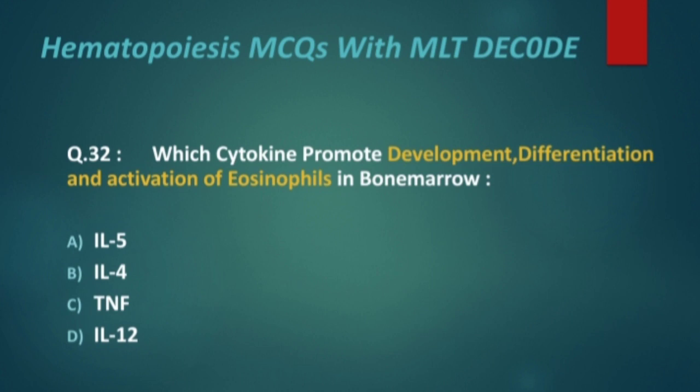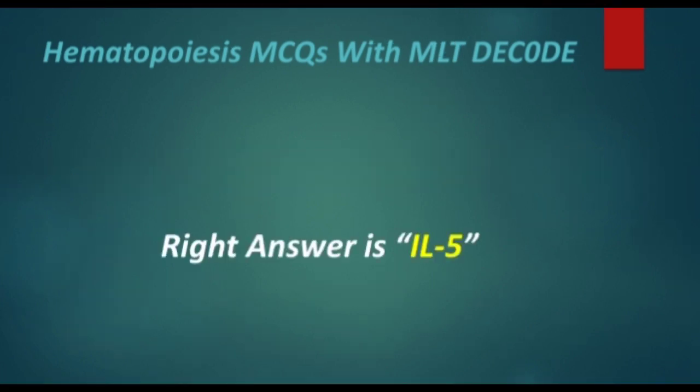Next: which cytokine promotes development, differentiation, and activation of eosinophils in bone marrow? Options are: interleukin-5, interleukin-4, tumor necrosis factor, and interleukin-12. The right answer is interleukin-5.